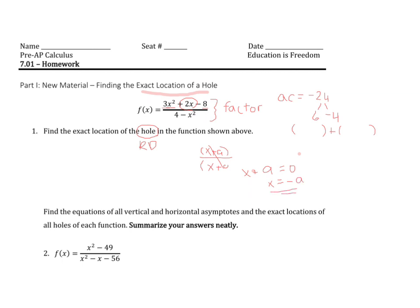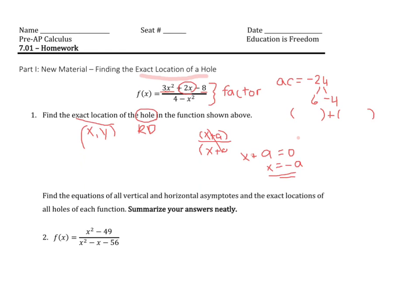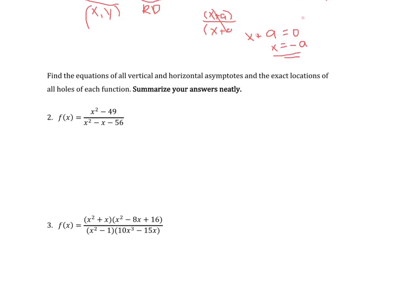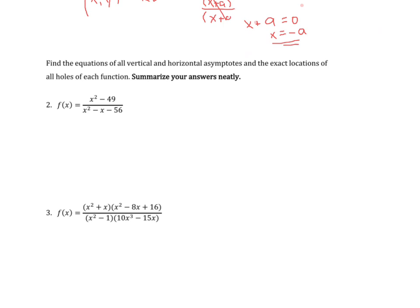Once you get that value, whatever it is, you're not done yet because it says find the exact location. Exact location is going to be the x and the y. All you got to do is take that x value, whatever it is, plug it back in, and I would recommend plugging it back into your factored form, and then you'll get the exact location.